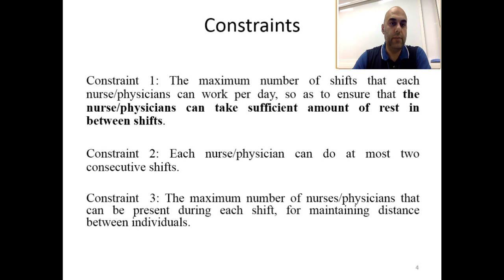The constraints that we will consider are the maximum number of shifts that each staff member, be it a nurse or a physician, can work per day, so as to ensure that the staff member can take sufficient amount of rest in between shifts. Constraint number two would be each staff member can do at most two consecutive shifts. And constraint number three is the maximum number of staff members that can be present during a given shift in order to maintain distancing between the individuals. Now I pass it on to my colleagues to give more technical details.